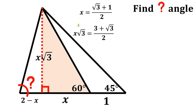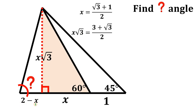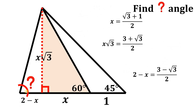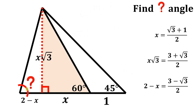Now we have the values of x and x times square root of 3. How about the segment 2 minus x? That is just 2 minus the value of x, giving us 3 minus square root of 3 over 2. And using these results, we can now find the value of this unknown angle.